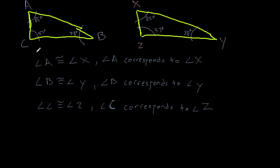So if these three angles are congruent, then I can write a congruency statement. So let's say, triangle ABC is congruent to triangle, well, angle A corresponds to angle X here, so I'm going to say triangle XYZ.